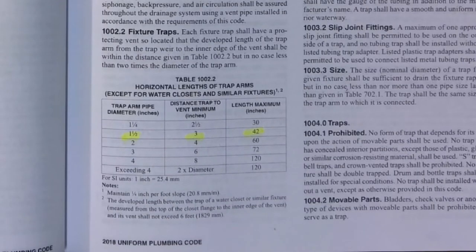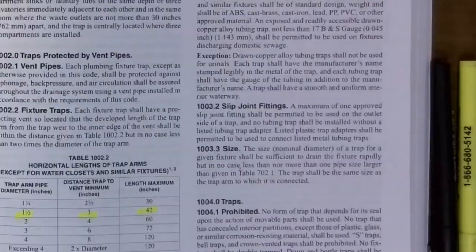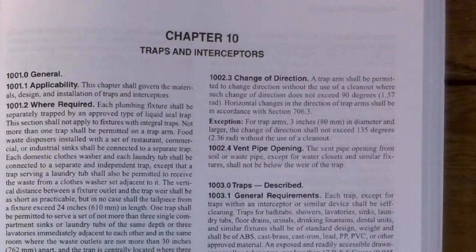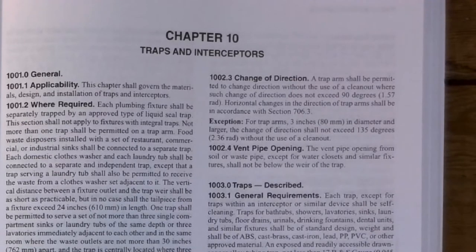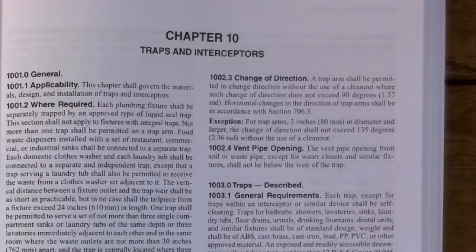If you exceed the length and exceed the total diameter of the pipe, you're dropping below the weir of the trap. Regarding change of direction: a trap arm shall be permitted to change direction without the use of a clean-out where such change does not exceed 90 degrees. Horizontal changes in direction of a trap arm shall be in accordance with section 706.3. For trap arms three inches in diameter and larger, the change of direction shall not exceed 135 degrees.